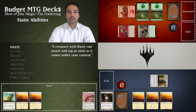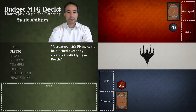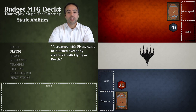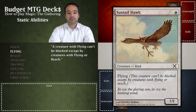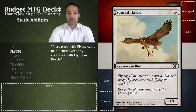Now we can move on to flying. A creature with flying can only be blocked by other creatures with flying or reach. Essentially a creature with flying flies over your opponent's creatures so they cannot block them. It is important to note that a creature with flying may still block creatures with or without flying. An example of a creature with flying is Sun Tail Hawk. Flying states that this creature can't be blocked except by creatures with flying or reach.